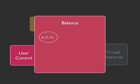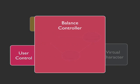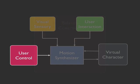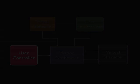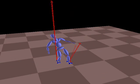To create more sophisticated behavior, we can organize simple control strategies into a state machine, which we call a controller. For example, we can create a more robust controller by allowing the character to take steps.